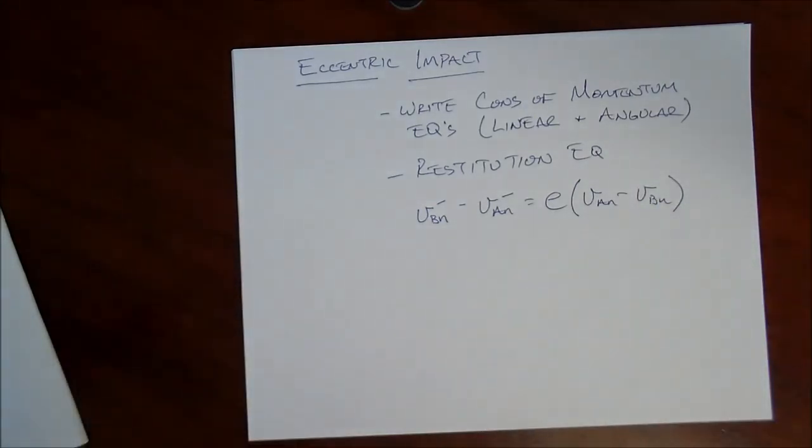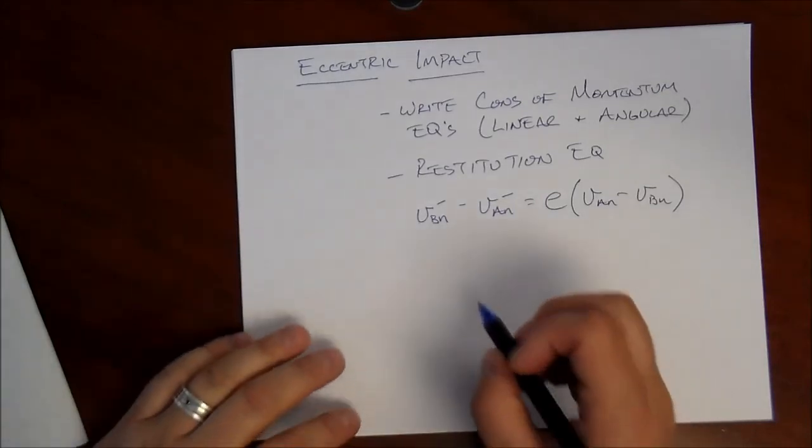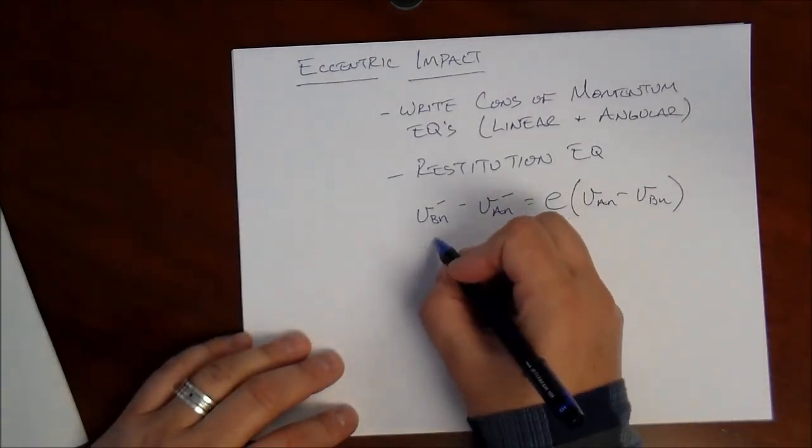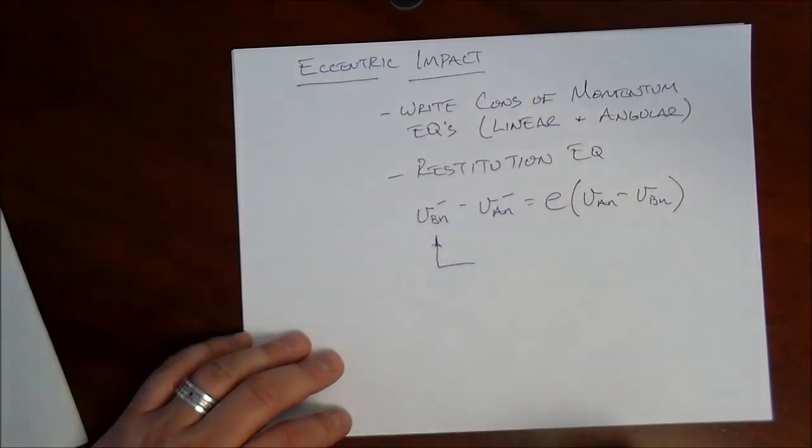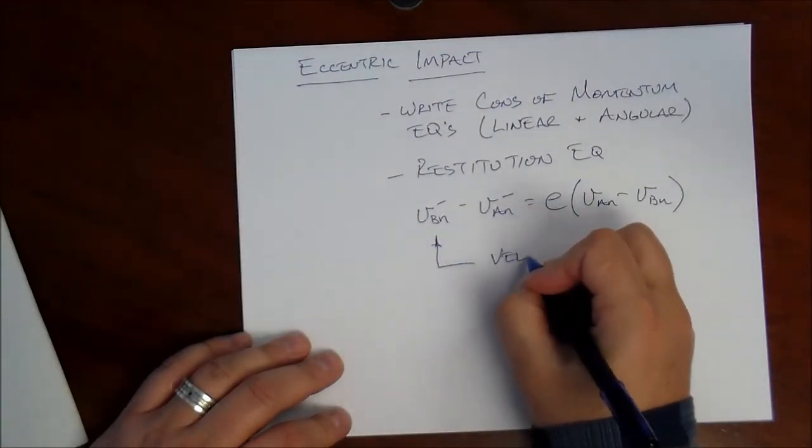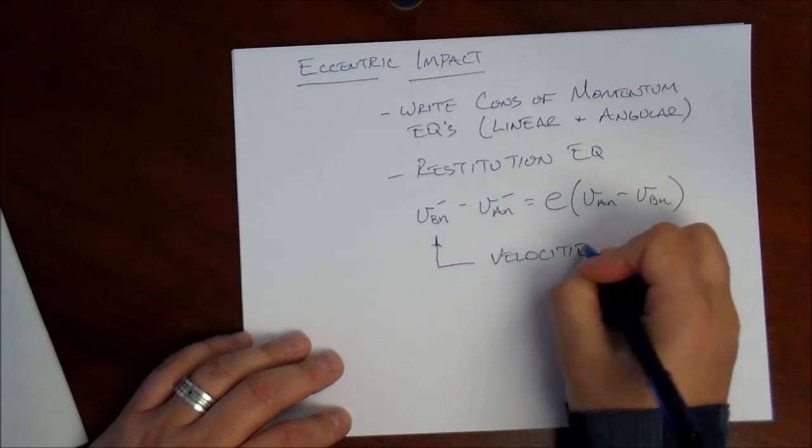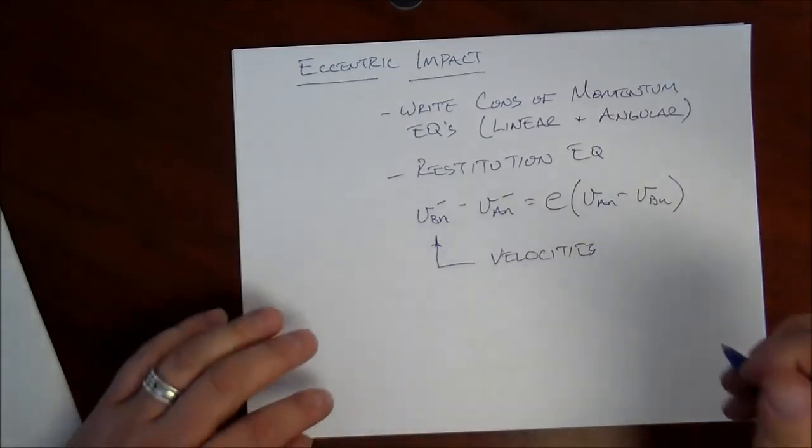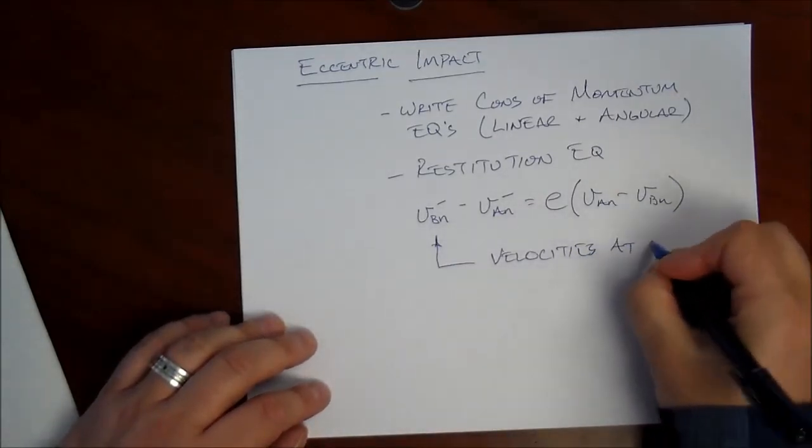So again, A and B are the two particles, or the two rigid bodies, excuse me, that are colliding. But the thing is, we have to write this equation, these velocities are the velocities at the point of impact.